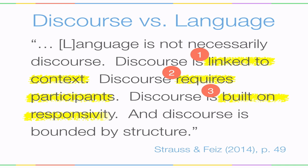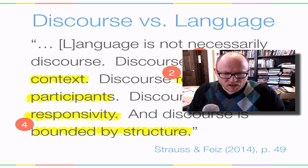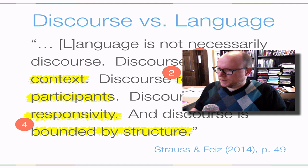Discourse is also built on responsivity. In other words, those participants are responding to each other in certain ways, or there's some kind of hoped-for action or change that someone initiating discourse is hoping for, and that response to the discourse is also important. And then fourth and finally, discourse is bounded by structure. Language itself has structure, but when we have a context and participants trying to respond to one another, those parts of the discourse are actually structured in particular ways. The things I'll talk about today are about the structure of discourse.